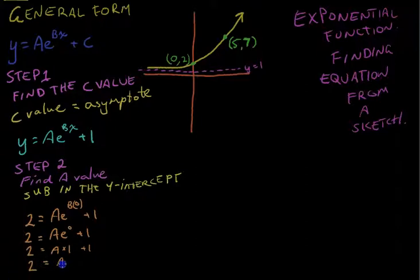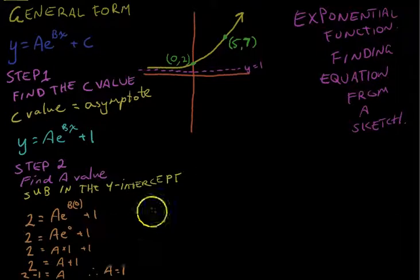That means 2 equals A plus 1, which means A equals 2 minus 1. Therefore, A equals 1. So this equation is looking fairly easy. We've just got one more step here. Obviously, we need to find the B value.